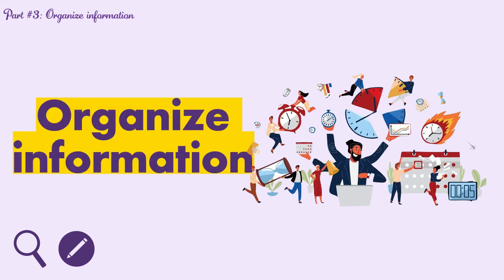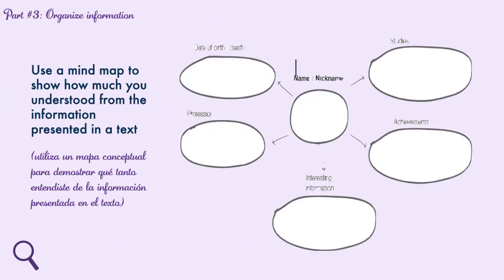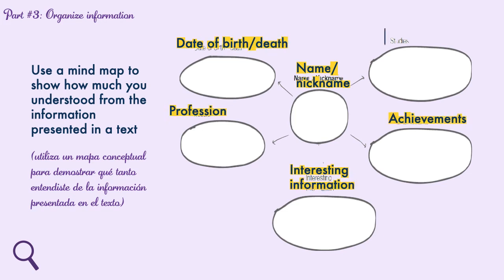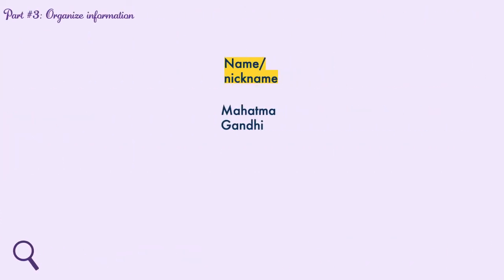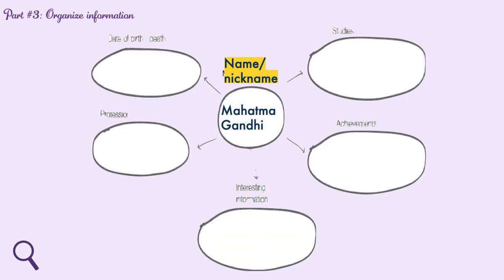In this challenge we are going to use a mind map. A mind map helps us show how much information we have understood from the text. The mind map includes the following information to find from the text: first, the name or nickname; second, the date of birth or death; the profession; interesting information; achievements; and studies.